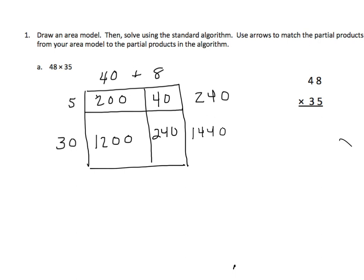We're going to now add the 1,200 and add the 240, and the sum is 1,440. Now we're going to relate that to our standard algorithm. And we'll point out the similarities by drawing some arrows to match parts. So let's start. We have 5 ones times 8 ones, which is equal to 40.